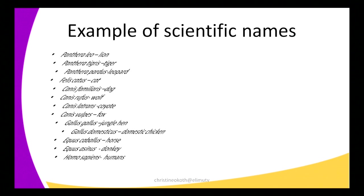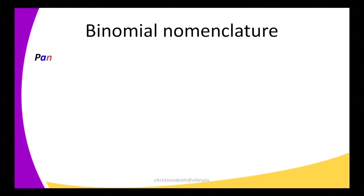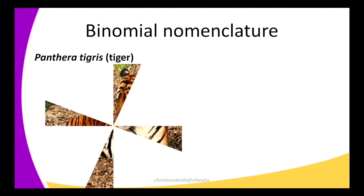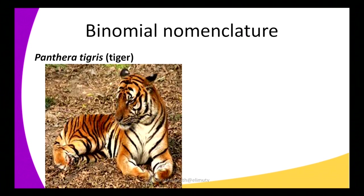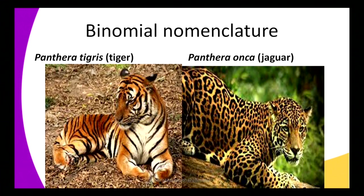So we have examples of scientific names. The first example: we have Panthera tigris, which is a tiger — the word is written in italics and all rules of classification have been observed. The other example: we have Panthera onca, which is a jaguar. The P is in capital letter and onca is in small letters, so it has observed all the rules of classification.